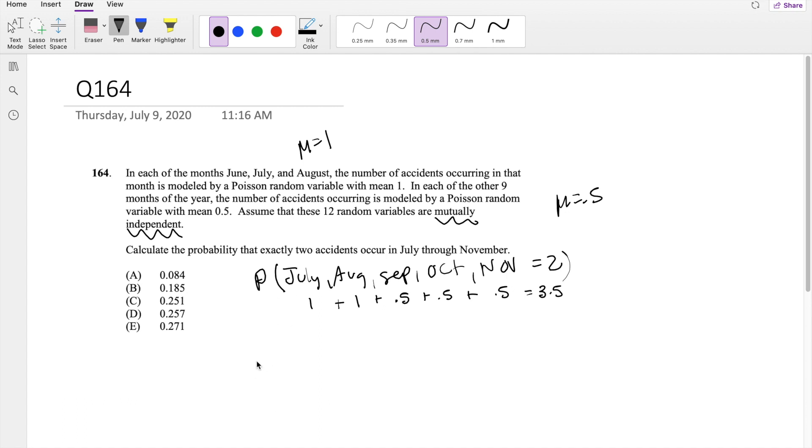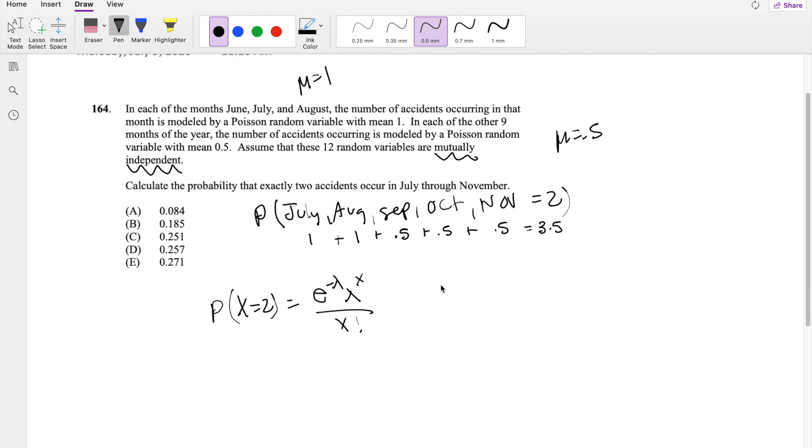So knowing that, this is just a regular Poisson distribution problem now, where x equals 2. So this equals e to the negative lambda, lambda to the x over x factorial by the definition of Poisson distribution. And we're plugging in 3.5 for lambda because within those 5 months the average is 3.5. So it would be e to the negative 3.5, 3.5 to the second power, divided by 2 factorial.